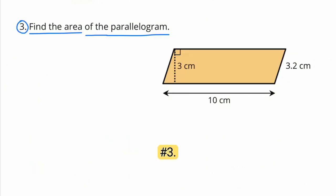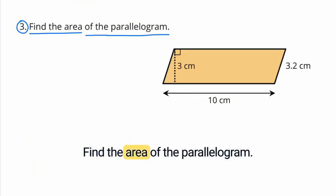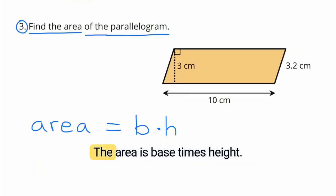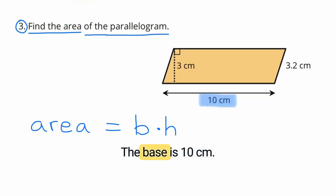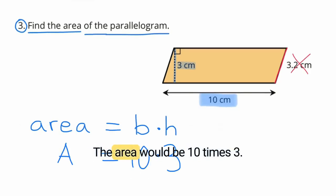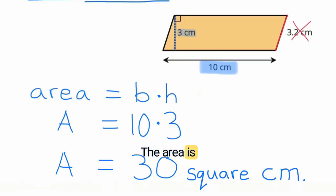Number 3: Find the area of the parallelogram. The area is base times height. The base is 10 centimeters and the height is 3 centimeters. The area would be 10 times 3, so the area is 30 square centimeters.